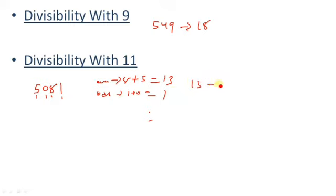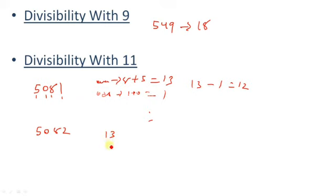Take another example: 5082. Sum of even place digits: 8 + 5 = 13. Sum of odd place digits: 2 + 0 = 2. Subtracting: 13 − 2 = 11. Since 11 is divisible by 11, so 5082 is divisible by 11. Remember: if after subtraction the result is 0 or divisible by 11, then the number is divisible by 11.